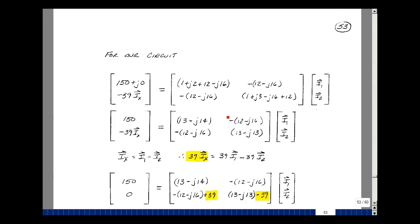So here's our voltages. Here's our impedances, and then here's our unknowns, I1 and I2. We've got two unknowns here, I1 and I2, but then I have another unknown here, I sub X.